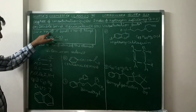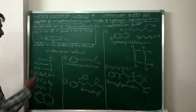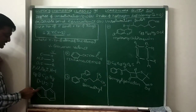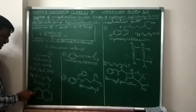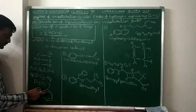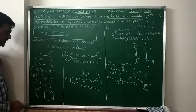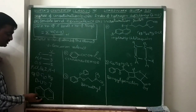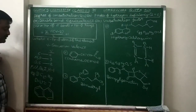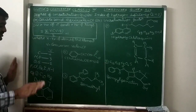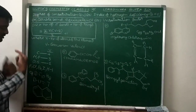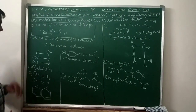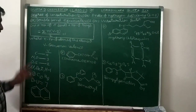With the structure formula also you get the same answer. How many pi bonds? 1, 2, 3, 4, 5 pi bonds. How many rings? 2 rings. 5 plus 2 equals 7. So in both ways you get the same answer.